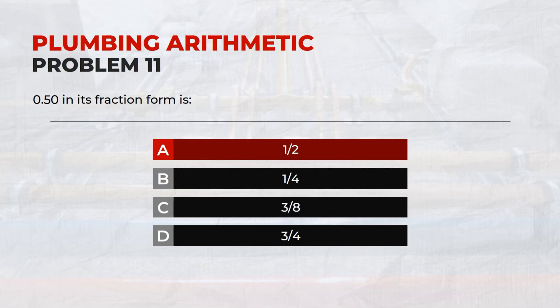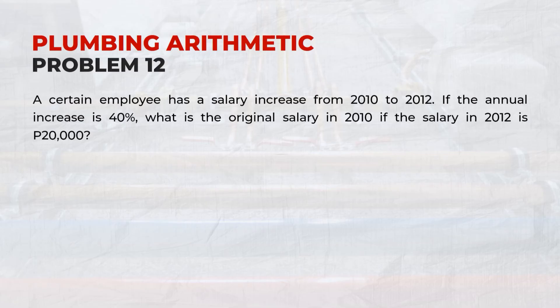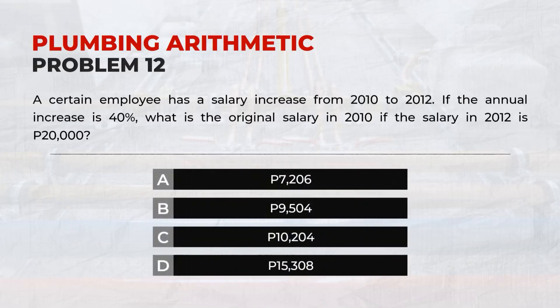If the employee has a salary increase from 2010 to 2012, and the annual increase is 40%, what is the original salary in 2010 if the salary in 2012 is 20,000 pesos? Answer: C. 10,204 pesos.